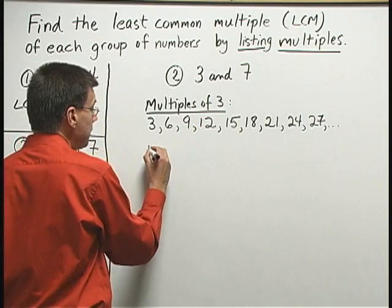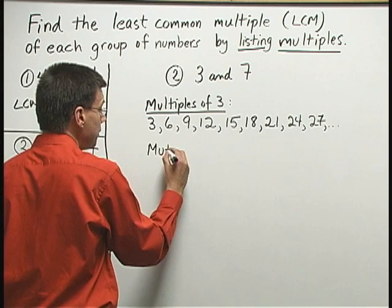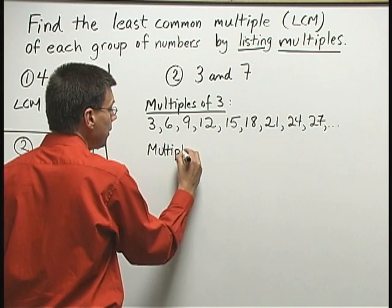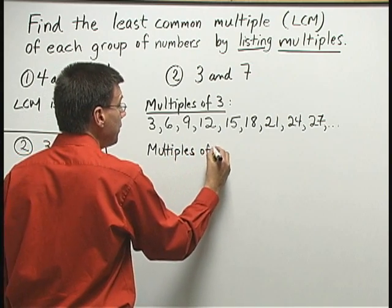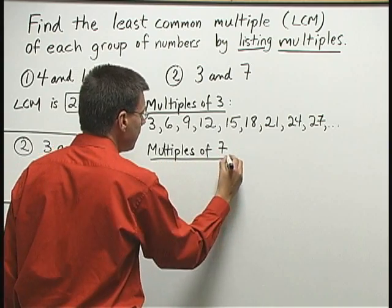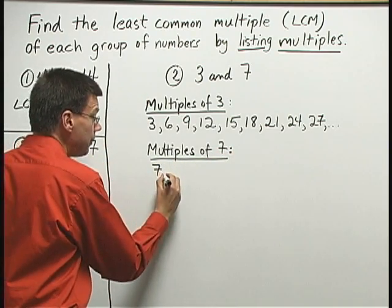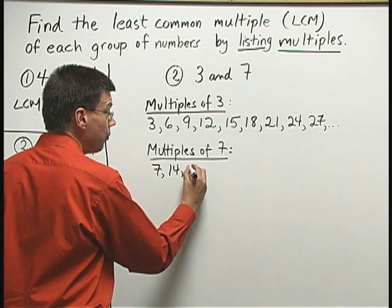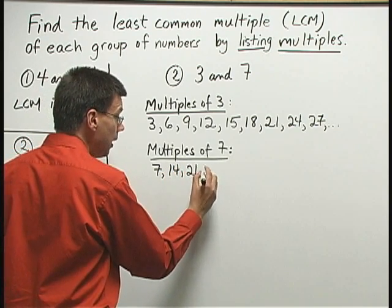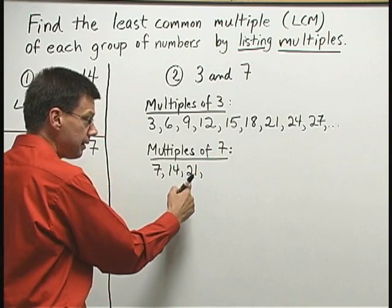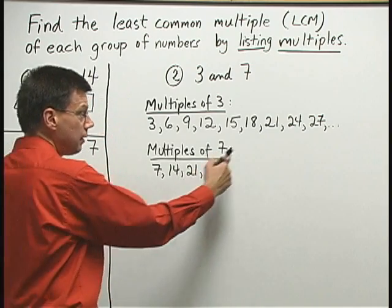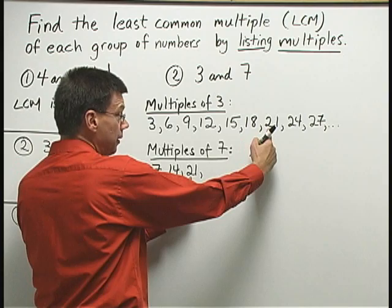Next, I need to list the multiples of 7. I'll start out with 1 times 7 is 7, 2 times 7 is 14, 3 times 7 is 21. And actually, I see that 21 occurs on both lists here.